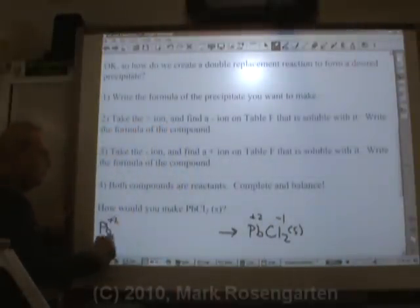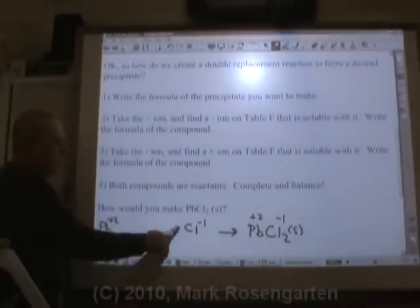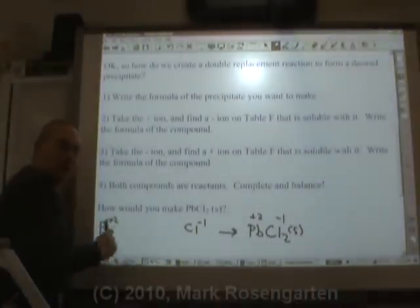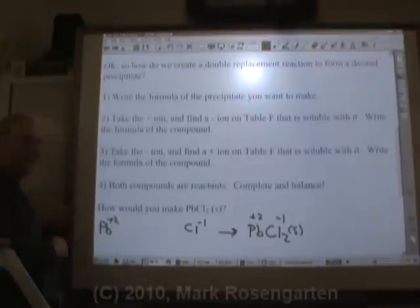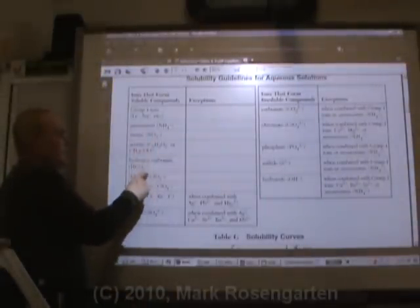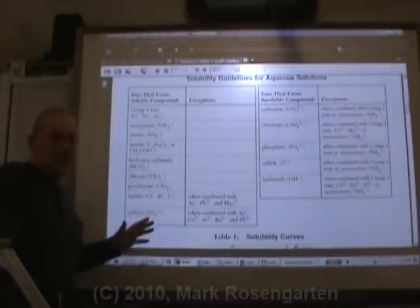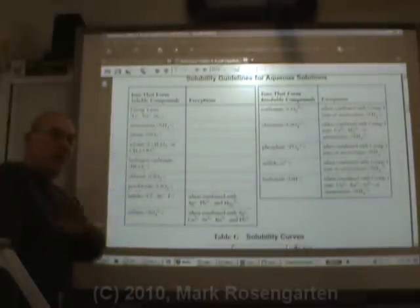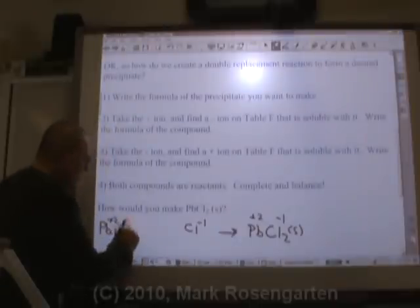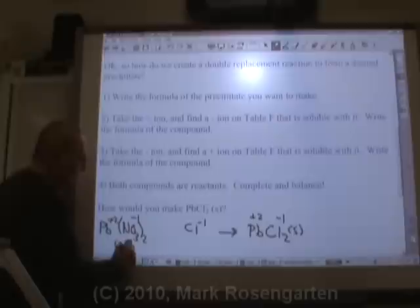Now what I'm going to do is look on reference table F and find soluble compounds of lead and chloride because to be double replacement, your reactants both have to be dissolved in water. Let's find a good soluble lead solution. Lead is positive. Let's find a soluble negative ion. The best soluble negative ion to use is nitrate. Your best bet, nitrate. You cannot go wrong with NO3 minus one. So we're going to use lead two nitrate, which will be dissolved in water because it's soluble.